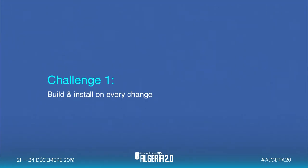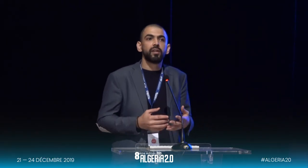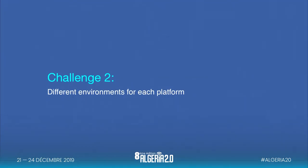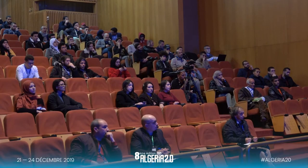These are the main challenges when developing a mobile application. First, you have to build and install for every change you make when doing native mobile applications. Every time you change Objective-C or Java code, you have to rebuild and run it again on a simulator, emulator, or real device just to see those changes. Second, as mentioned, different environments — you have to set up a separate environment for building an iPhone application versus an Android application, and different tools and languages.